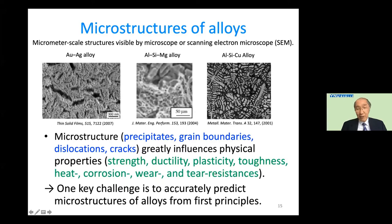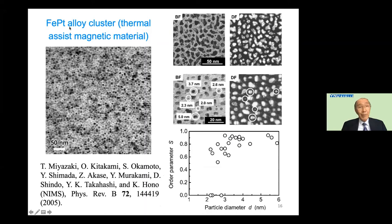One key challenge is to accurately predict microstructures of alloys from first principles. This is an example of an iron-platinum alloy cluster, where there are many fine particles of several nanometer size — an earlier experiment by Professor Hornow's group at NIMS — along with a summary of the experimental results.